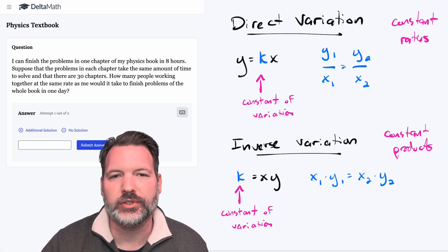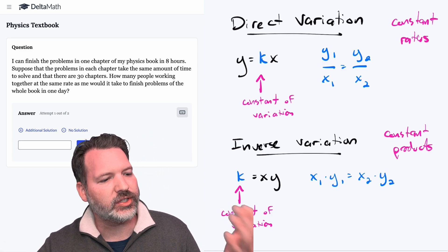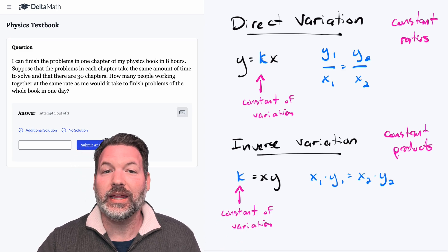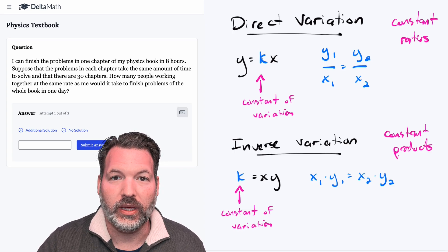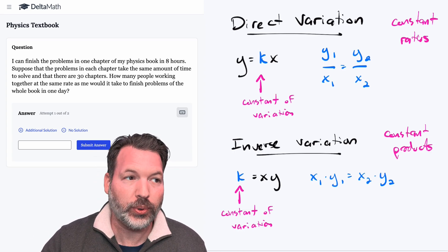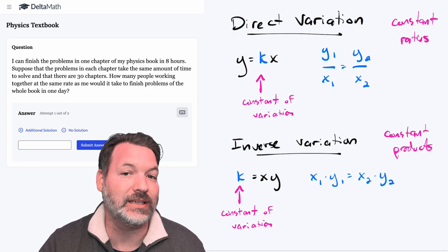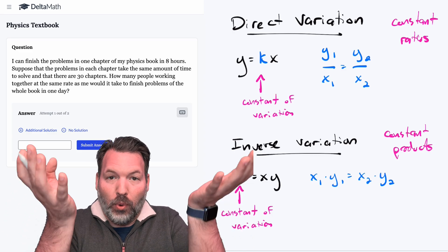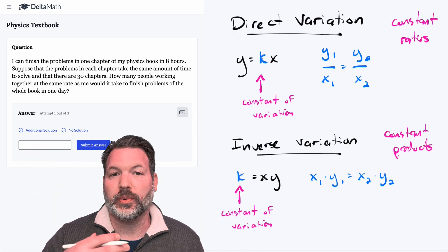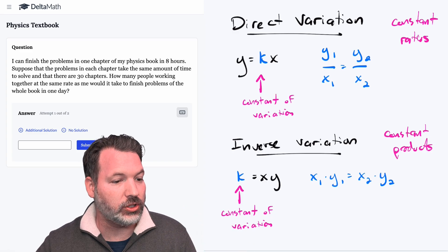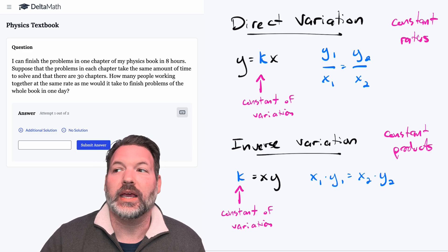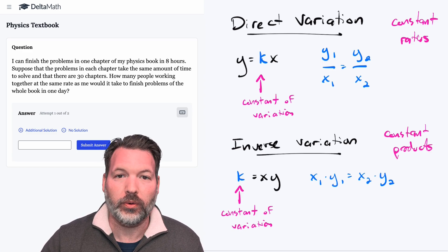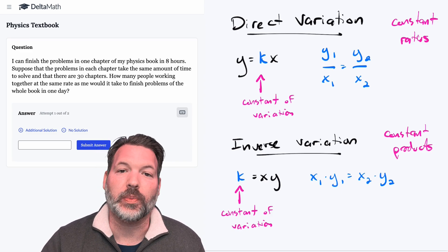Let's think through some example scenarios. Direct variation would be something like having a certain number of chickens — maybe five chickens that can lay ten eggs in a day. If I purchase chickens expected to lay eggs at the same rate, more chickens would mean more eggs. Five chickens corresponded to ten eggs, so ten chickens would correspond to twenty eggs, or fourteen chickens to twenty-eight eggs. The constant of variation is two — I'm getting two eggs per chicken, so I multiply the number of chickens by two to get the expected number of eggs.